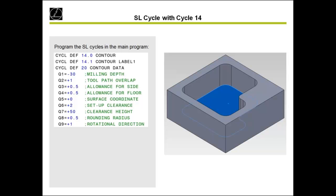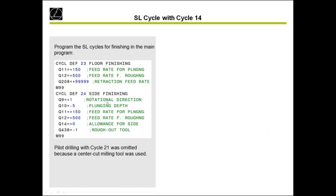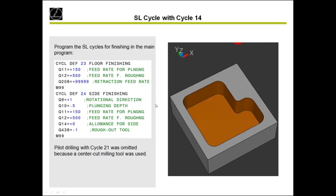Then I enter cycle 14 and cycle 20 with the allowance for side and floor. The next step is the roughing cycle, followed by the two finishing cycles. After every cycle, M99 is used to call the cycle. The result is a finished pocket.